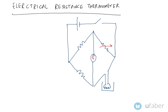One of the most commonly used thermometers is the electrical resistance thermometer. As we studied in the previous slides, the thermometric property is the resistance. In this resistance thermometer, the change in resistance of a metal wire — usually made up of platinum — due to its change in temperature is the basic thermometric property.